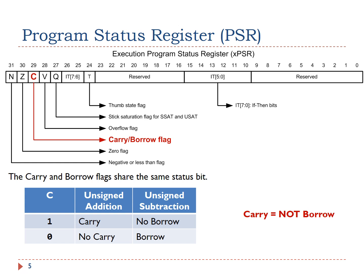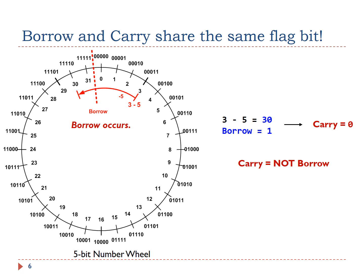ARM Cortex-M microprocessors use the carry flag bit to represent borrow for unsigned subtraction. The simple rule to remember is: carry equals NOT borrow. Therefore, in the previous example of subtracting 5 from 3, ALU clears the carry flag. A borrow has been generated, so borrow is 1; carry equals NOT borrow, and as a result, carry is 0.